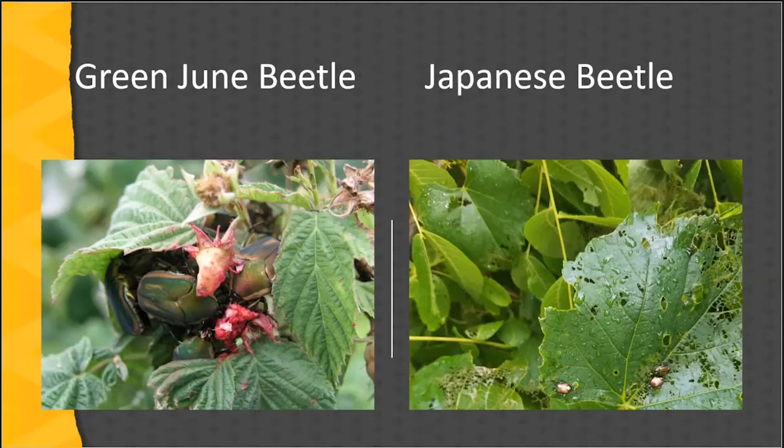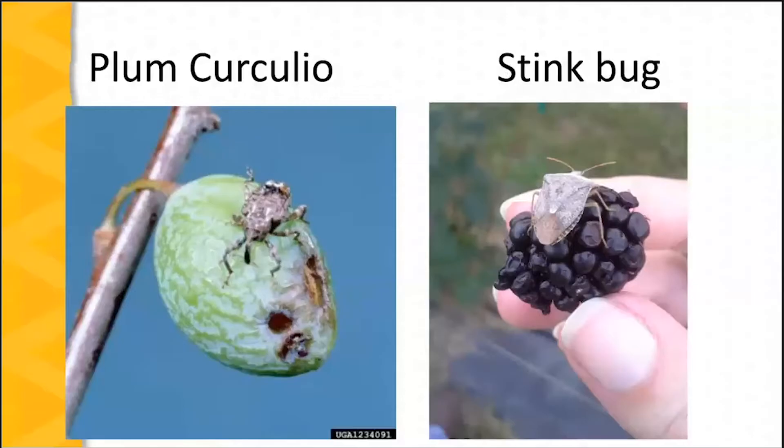Another example is plum curculio, which has a piercing-sucking mouth part. In the picture below the insect, you can see a round hole that's feeding damage, but they also cause damage from laying their eggs. The little crescent-shaped wound on the fruit is actually from the ovipositor where they're laying their eggs.